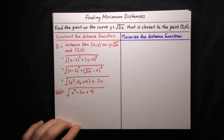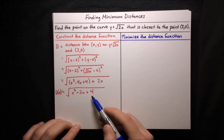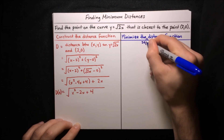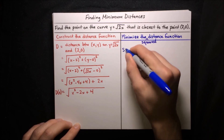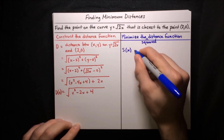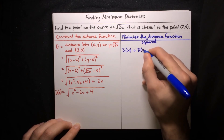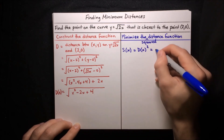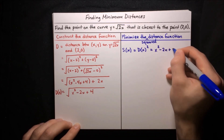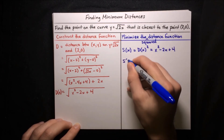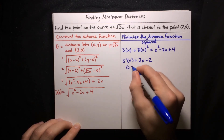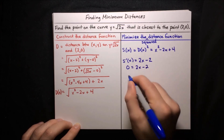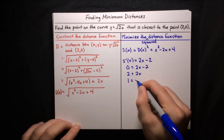To minimize, we again use the squared distance function s(x) = x² − 2x + 4, which avoids dealing with the square root. Taking the derivative: s′(x) equals 2x minus 2. Setting that equal to zero gives 2x equals 2, so x equals 1.